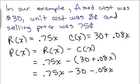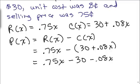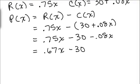So we've got 0.75 minus that 0.08 which is 0.67x - 30. So what would our profit be on 220 items?